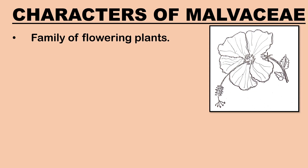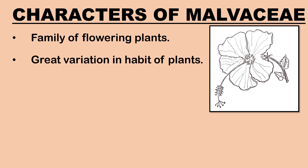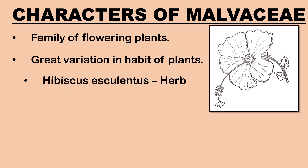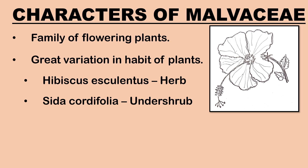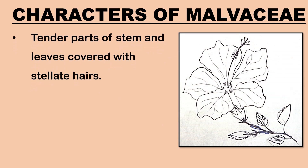Malvaceae, or the mallow family, is a family of flowering plants. The family shows great variation in the habit of plants. Most species are perennial herbaceous plants or shrubs, but some are trees. Hibiscus esculentus is a herb covered with hairs. Sida cordifolia is a small under-shrub, while Hibiscus macrophyllus is a small deciduous tree. The tender parts of both stem and leaves are covered with stellate hairs.